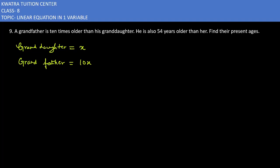Now he said he is also 54 years older than her. He means grandfather. 10x is equal to 54 plus x. Older means plus, than her.